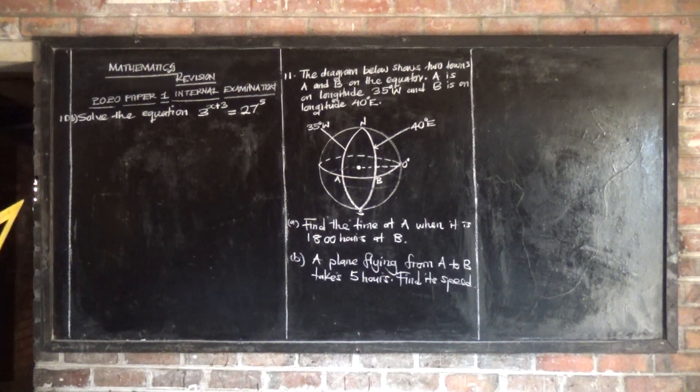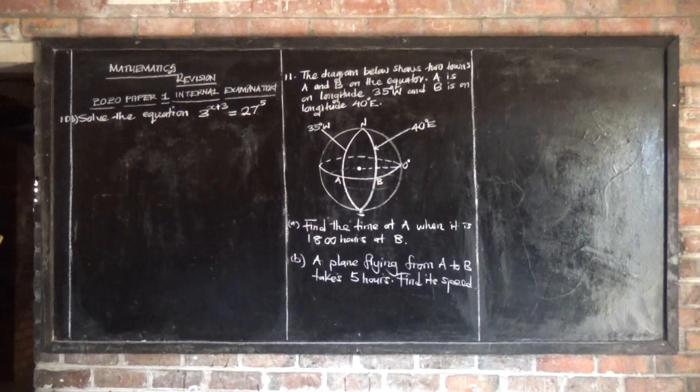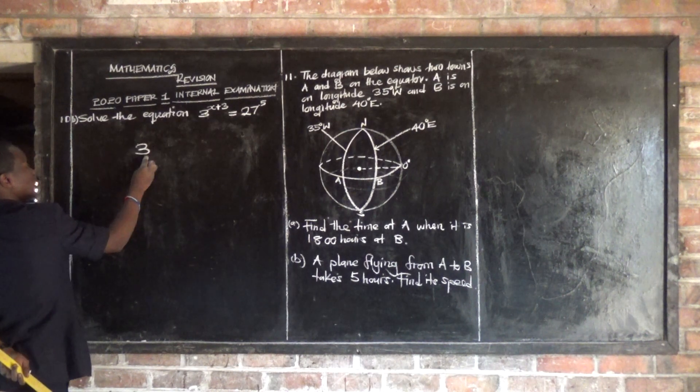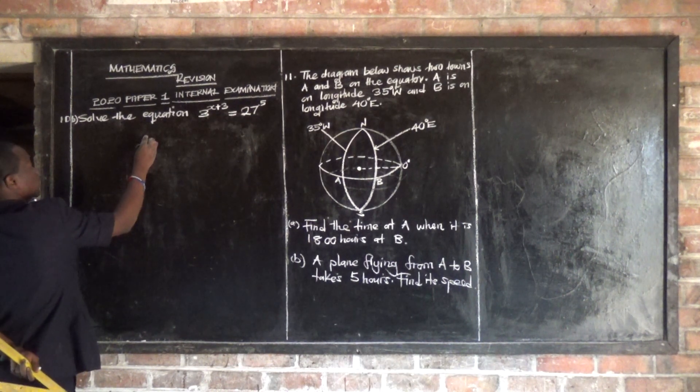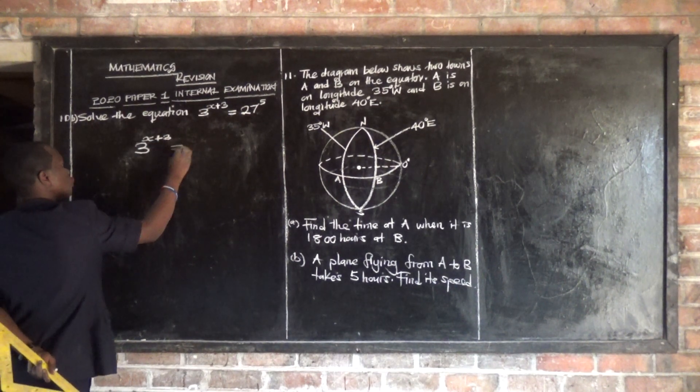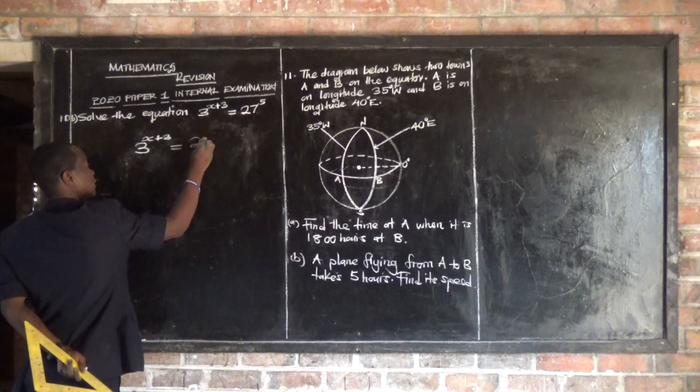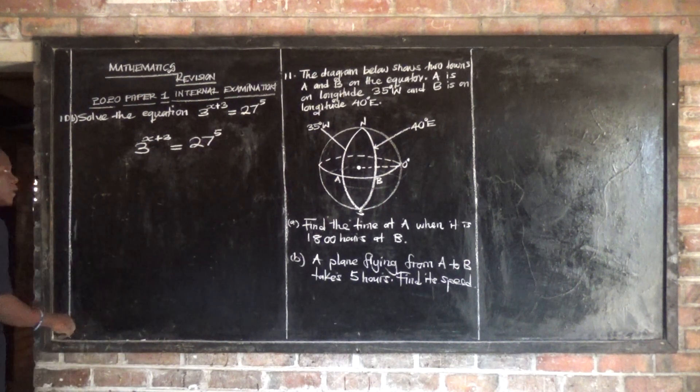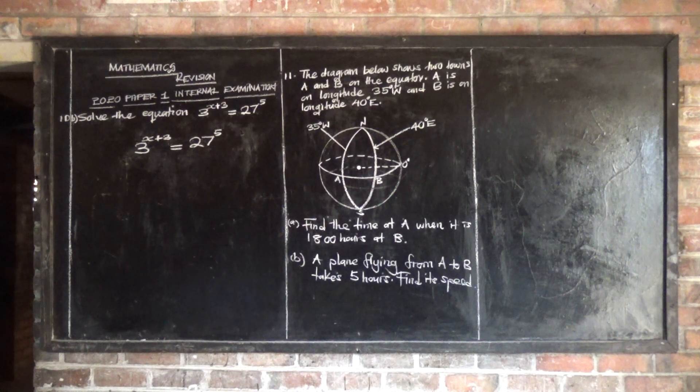So let's look at question number 10B. It says solve the equation. The equation is 3 raised to the power x plus 3, that is equal to 27 raised to the power 5. So now how do you solve this equation?